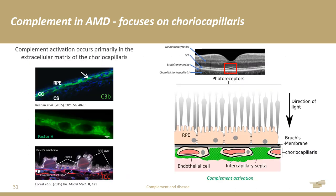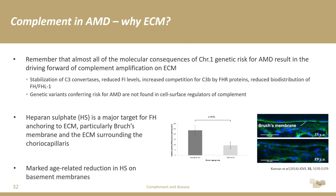If you pick any marker of complement turnover or deposition and look for it in AMD eyes, you will find it predominantly in the outer blood-retinal barrier, with very little complement deposition within the retinal tissue itself. Why is it in this ECM? The functional consequences of the genetic associations are not entirely worked out, but those that are clearly pinpoint a dysregulation of complement turnover on extracellular matrix — including the polymorphism in factor H causing a perturbation in its ability to anchor to glycosaminoglycans such as heparan sulfate.